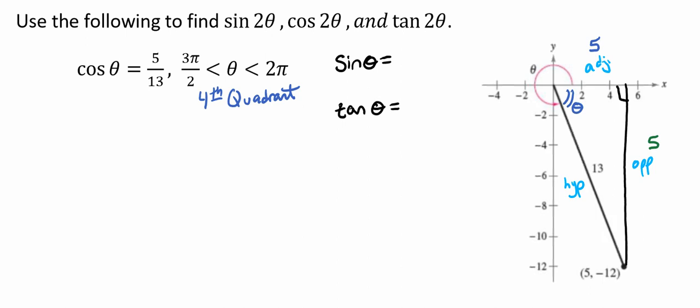We've already been given that the cosine of theta is 5 over 13. But in order to find the sine of 2 theta and the tangent of 2 theta, we're going to need the sine of theta and the tangent of theta. So using our triangle on the right-hand side, we can see that our sine of theta is going to be negative 12 over 13, and that our tangent is going to be negative 12 over 5.